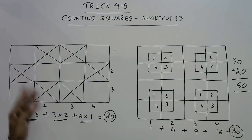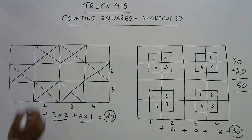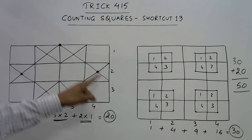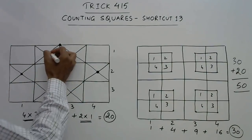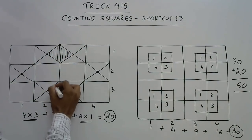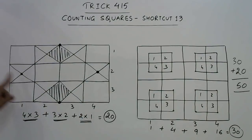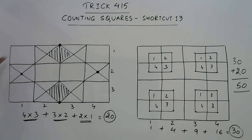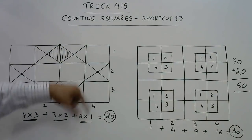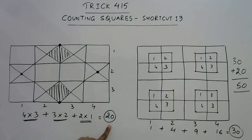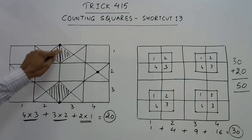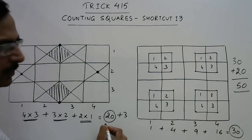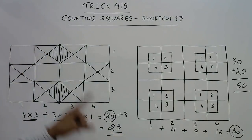Now what about the remaining squares? If you observe carefully, there is one large square and 2 small ones — apart from these 3 squares, no other squares are left uncounted because all horizontal and vertical lines have already been accounted for in the 20 squares. So only these 2 small squares and 1 large square remain, giving 3 more squares. Adding 3 to 20 gives the final answer of 23 squares in this figure.